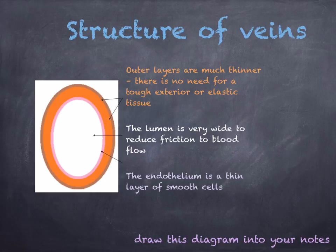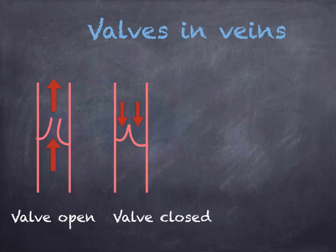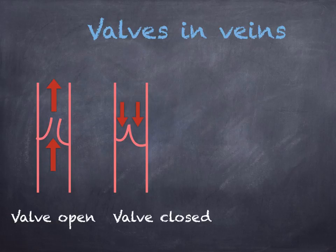The basic structure of the vein is the same as the artery, but the outer layers are much thinner. The lumen is in the middle, the endothelium has a thin layer of smooth cells, and the outer layers are much thinner — there's no need for tough exterior elastic tissue because the pressure is not as high. The valves are flaps of extra endothelium that fill with blood when it flows the wrong way, closing the vein and ensuring blood always flows in one direction back towards the heart. Veins also pass through major muscles which squeeze blood through them.